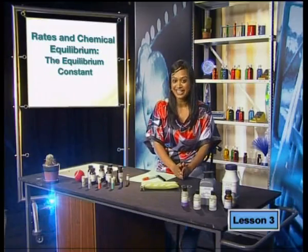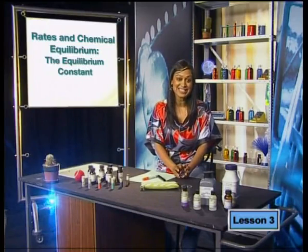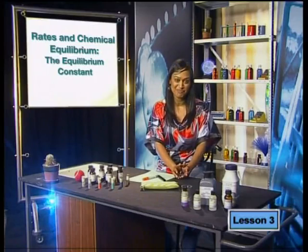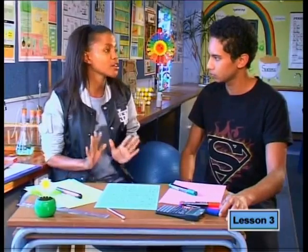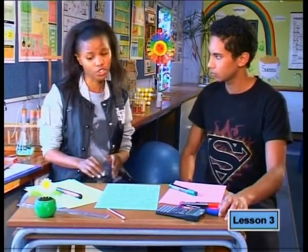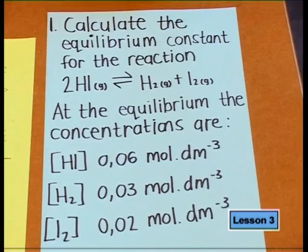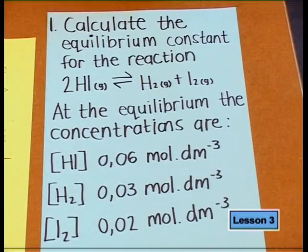Kanye and Rahim have been asked to work out the Kc value for some reactions at equilibrium. The first question: calculate the equilibrium constant for the reaction where hydrogen iodide gas produces hydrogen gas and iodine gas. At equilibrium, the concentration of hydrogen iodide is 0.06 mol·dm⁻³, the concentration of hydrogen is 0.03 mol·dm⁻³, and the concentration of iodine is 0.02 mol·dm⁻³. We need to write our expression for Kc first.